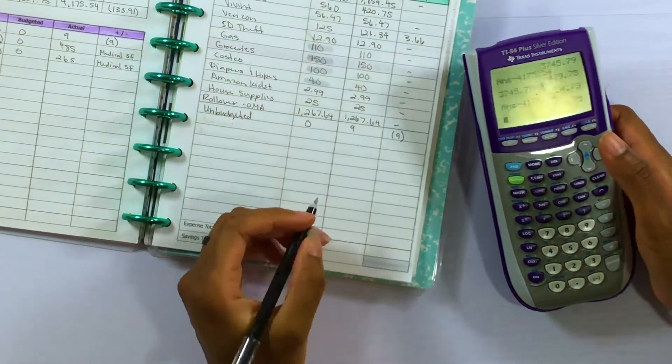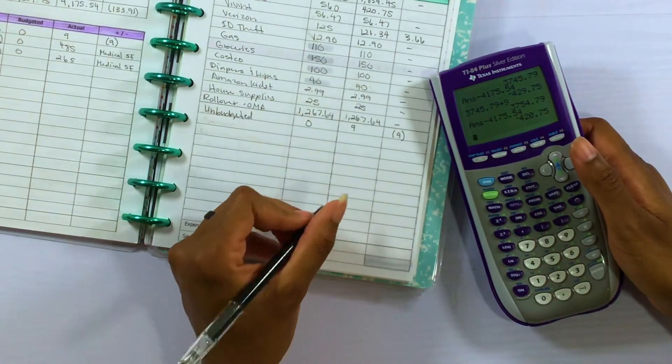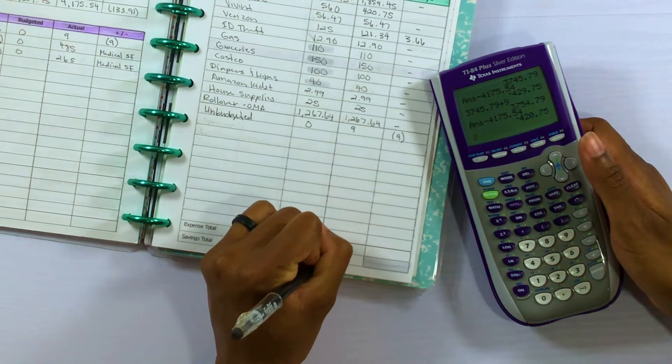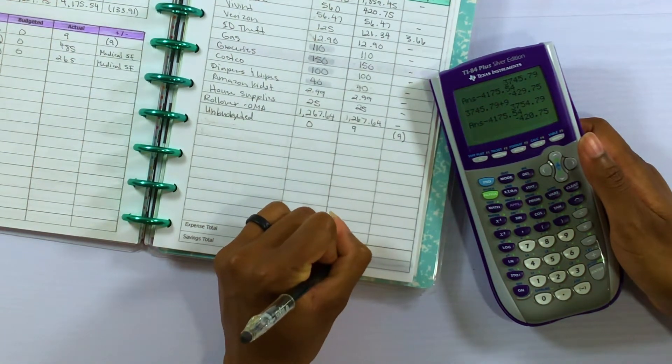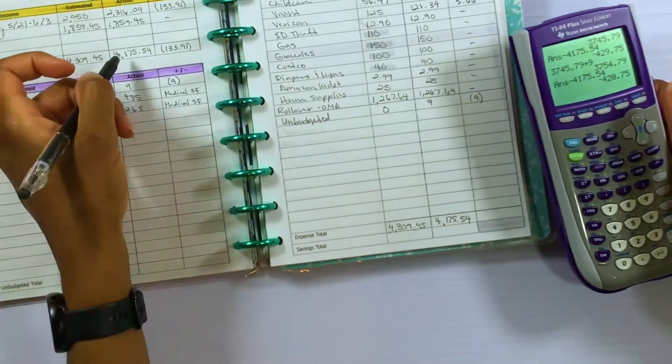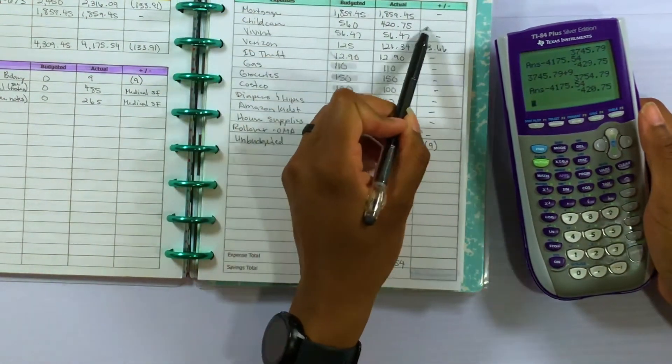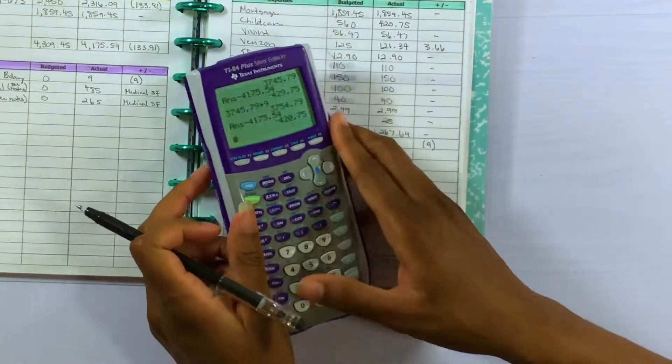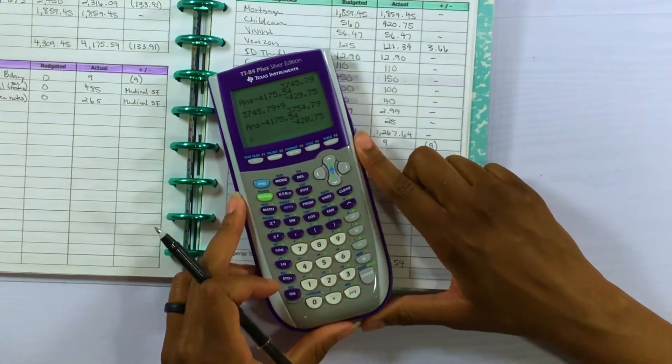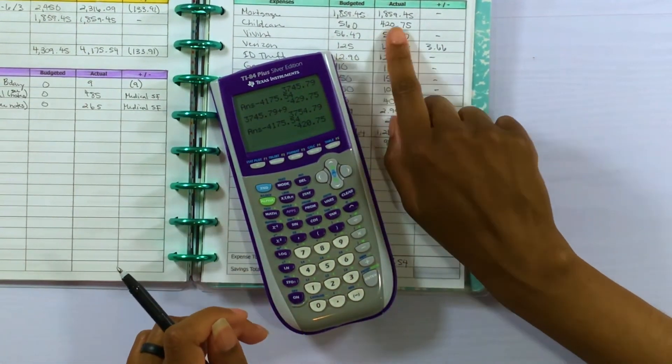Okay, so this down here is going to be $4,175.54 to match the income that we had coming in. And then let's see, let's go across so we can see what the difference in the child care was.